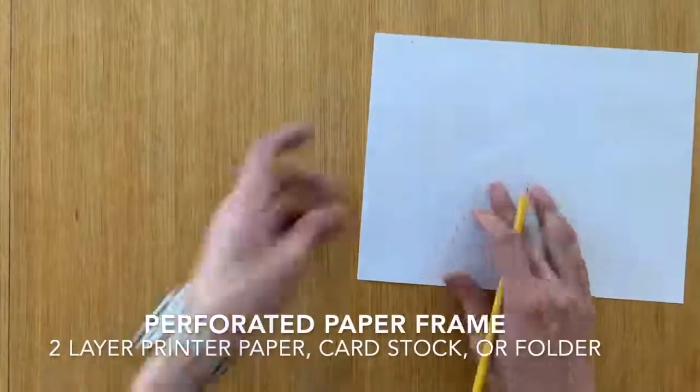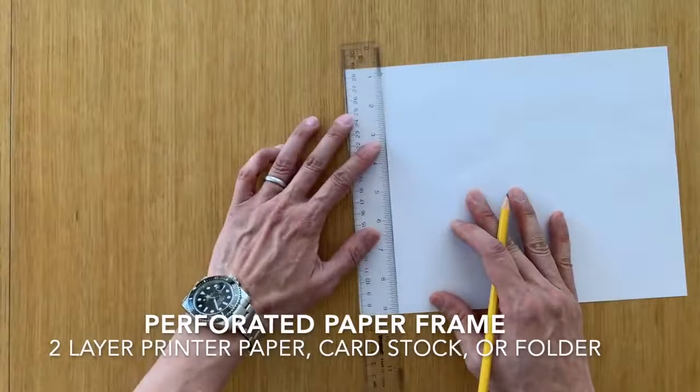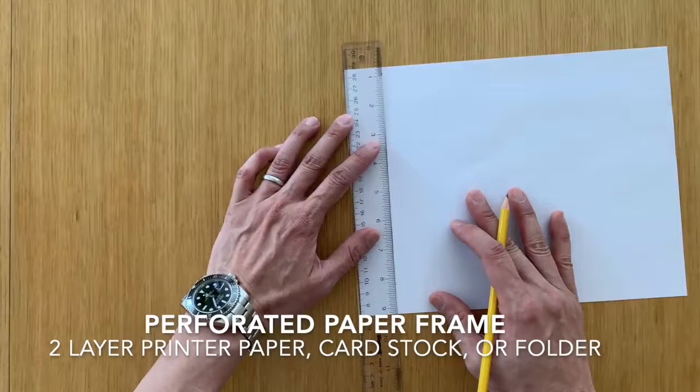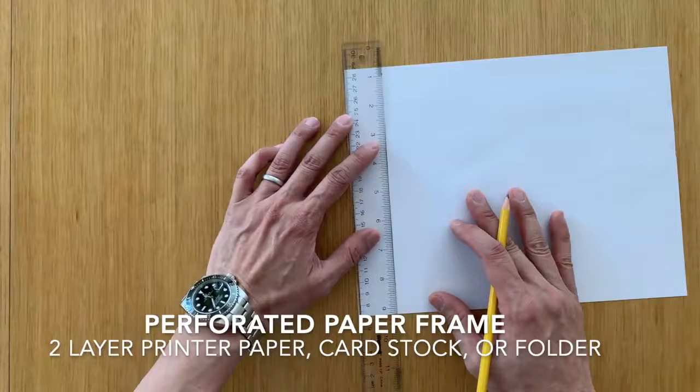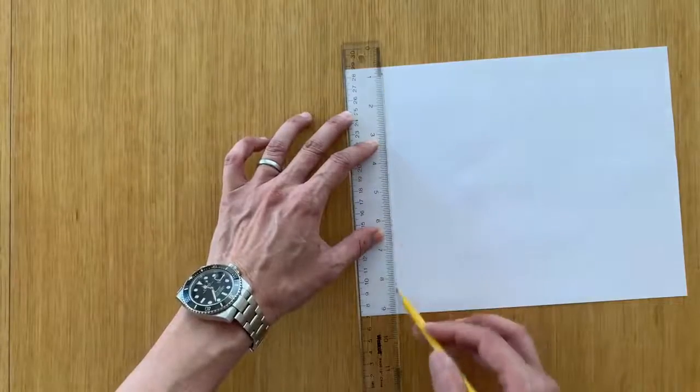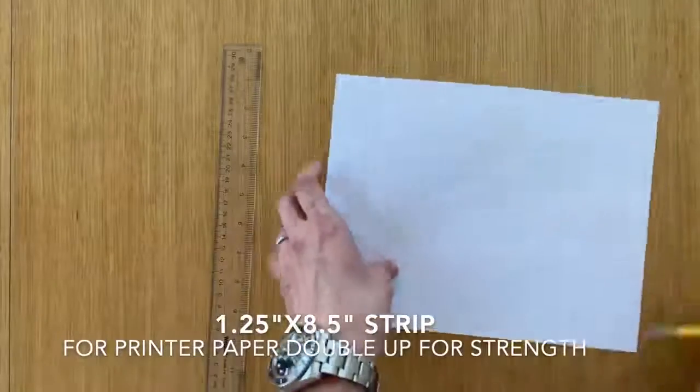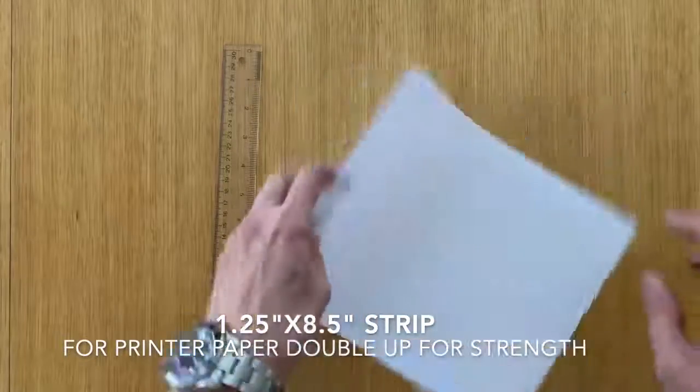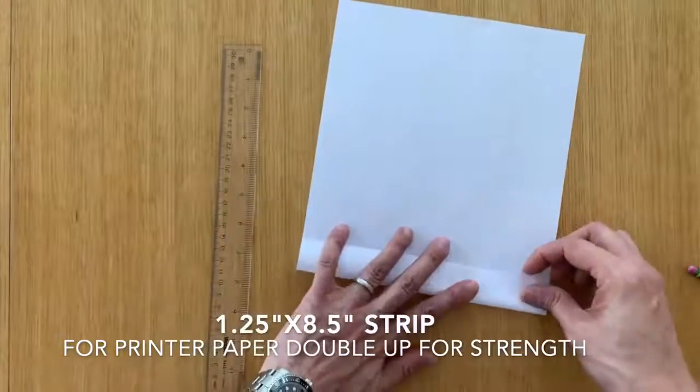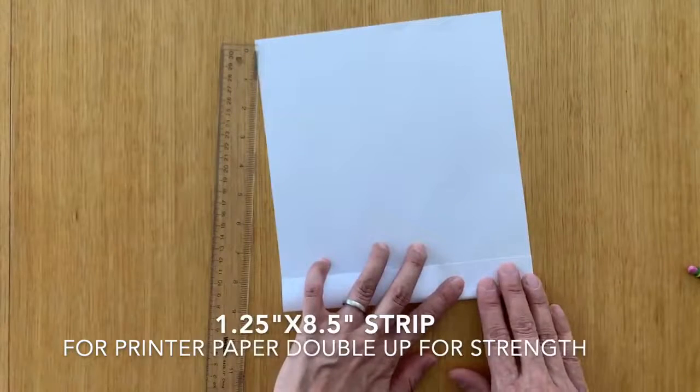Insert this inside the t-shirt here. And what we're trying to do is we're trying to make a stiffener. You can use like a folder material or cardstock. Let's say a manila folder that you might get from the office. In this case, what we're going to do is because printer paper is much thinner, we're going to actually fold it onto itself to make it twice as thick.